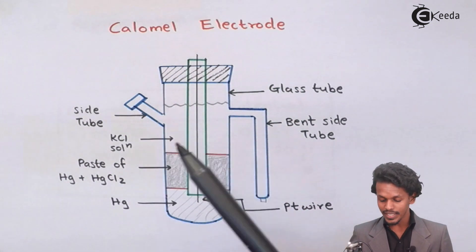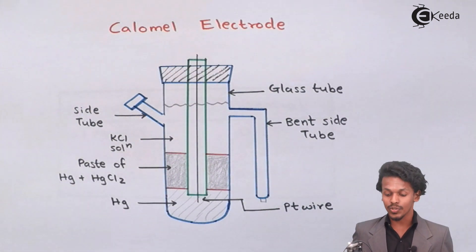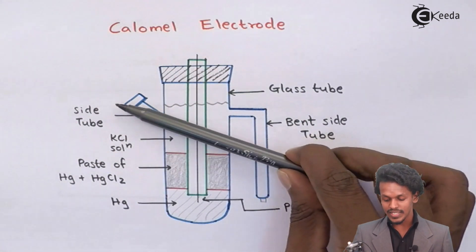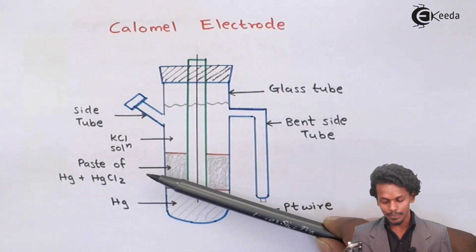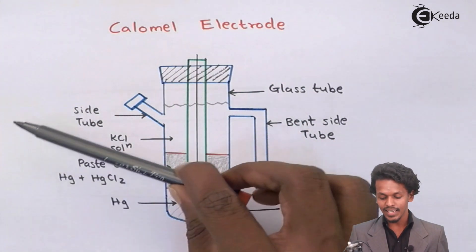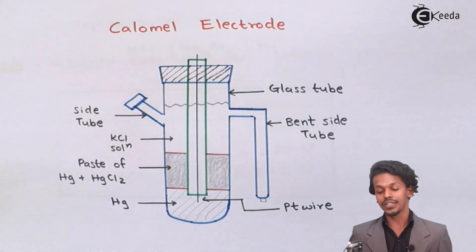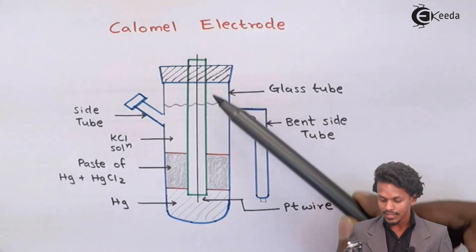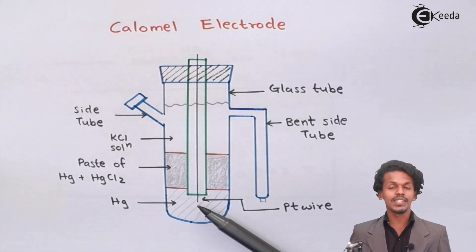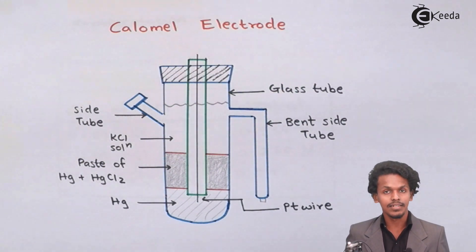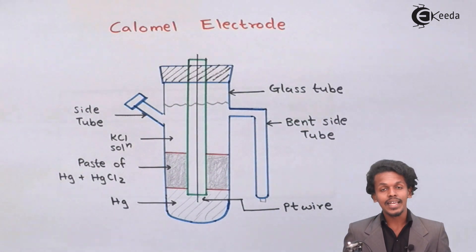The KCl solution in this electrode is not constant — it can be changed. That is why the side tube is used: first mercury is deposited, then the paste of Hg + HgCl₂ is added, and then KCl solution of different concentrations can be applied. The platinum wire serves as the electrode to connect the electricity to the external circuit through which the other electrode is also connected.